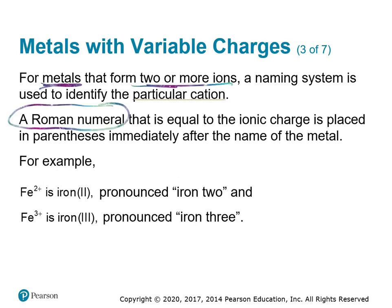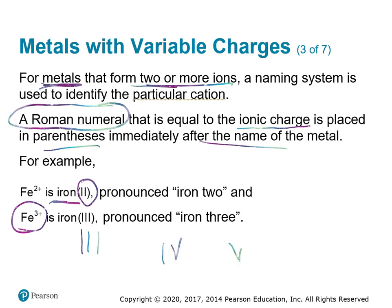We use a naming system to identify the particular cation if it's one of those metals that form two or more ions. We use what's called a Roman numeral that tells us the ionic charge, and that's put in parentheses right after the name of the metal. For example, iron in plus 2 form combining with chlorine gives iron(II) chloride. Iron 3 would be iron with Roman numeral III. Lead 4 would be IV, 5 is V, and 6 is VI.